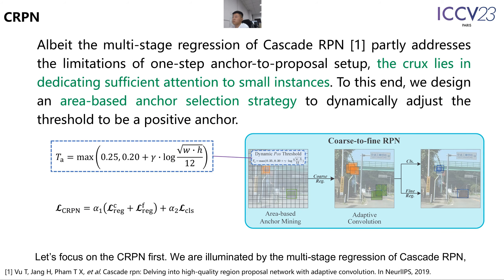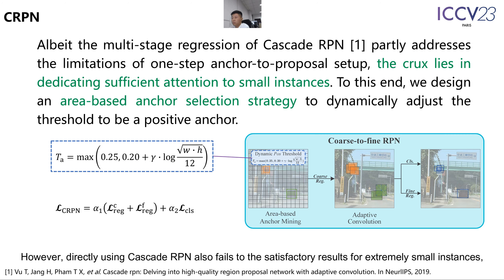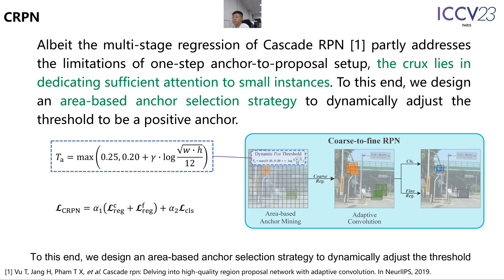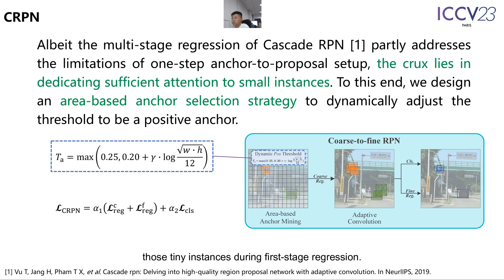Let's focus on the CRPN first. We are inspired by the multi-stage regression of Cascade RPN, which partly addresses the limitations of one-step anchor-to-proposal setup. However, directly using Cascade RPN also fails to achieve satisfactory results for extremely small instances, and we believe the crux lies in dedicating sufficient attention to small instances. To this end, we design an area-based anchor selection strategy to dynamically adjust the threshold to be a positive anchor, relaxing the positive threshold for those tiny instances during first-stage regression.